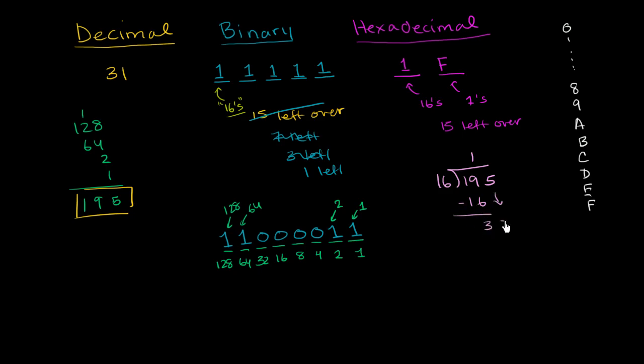You get a 3, bring down the 5. 16 goes into 35 2 times. 2 times 16 is 32. Then you subtract, you have a remainder of 3. So you have 12 16s plus 3 1s. So let me write it again. 195, you could write this as 12 16s, and then plus 3 1s. 16 goes into 195 12 times. So you have 12 16s, and then you have 3 1s.